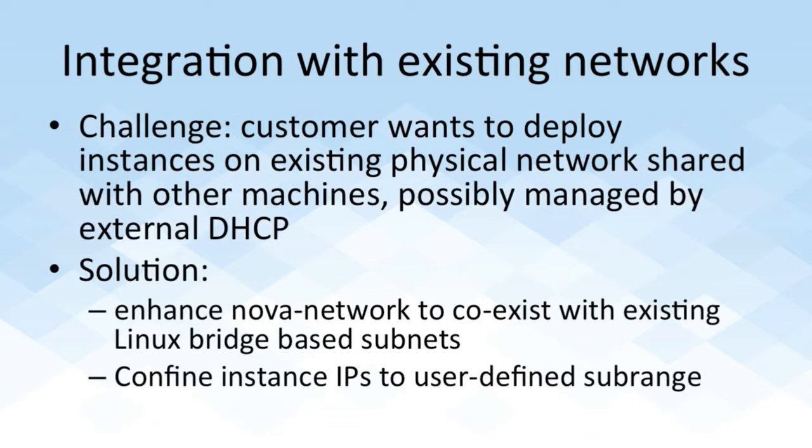Moreover, we allow the user to define settings for the network, and in particular, a sub-range within that network that Nova can then use as an IP pool from which to allocate IP addresses for instances. With this solution, instances that are deployed can now communicate and co-exist with existing machines.